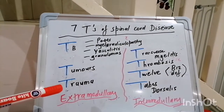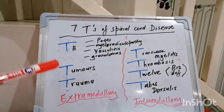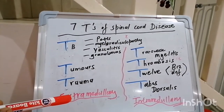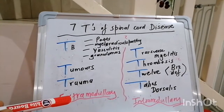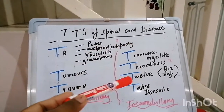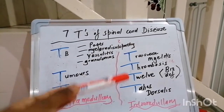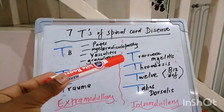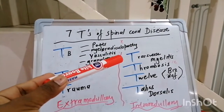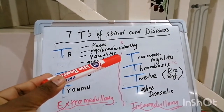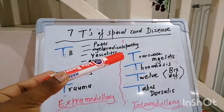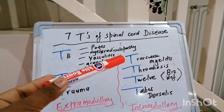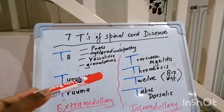Now these three causes of spinal cord disease give you extramedullary compression or manifestations, versus intramedullary causes, where we have transverse myelitis, which can be the result of some inflammatory, infectious, or paraneoplastic etiology.